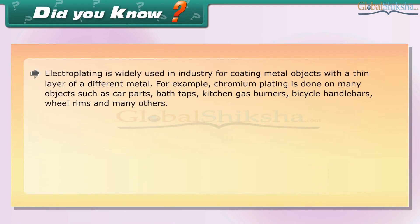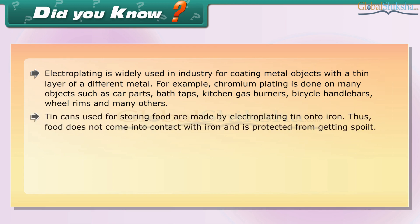Electroplating is widely used in industry for coating metal objects with a thin layer of a different metal. For example, chromium plating is done on many objects such as car parts, bath taps, kitchen gas burners, bicycle handlebars, and wheel rims. Tin cans used for storing food are made by electroplating tin onto iron, so food does not come into contact with iron and is protected from getting spoiled.